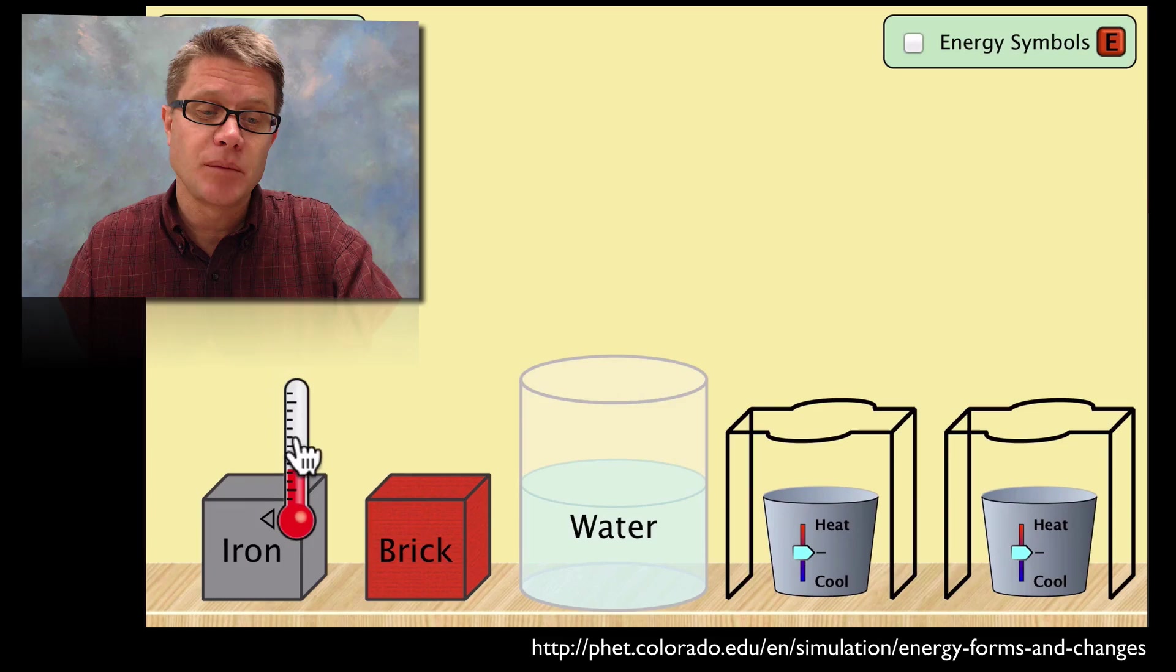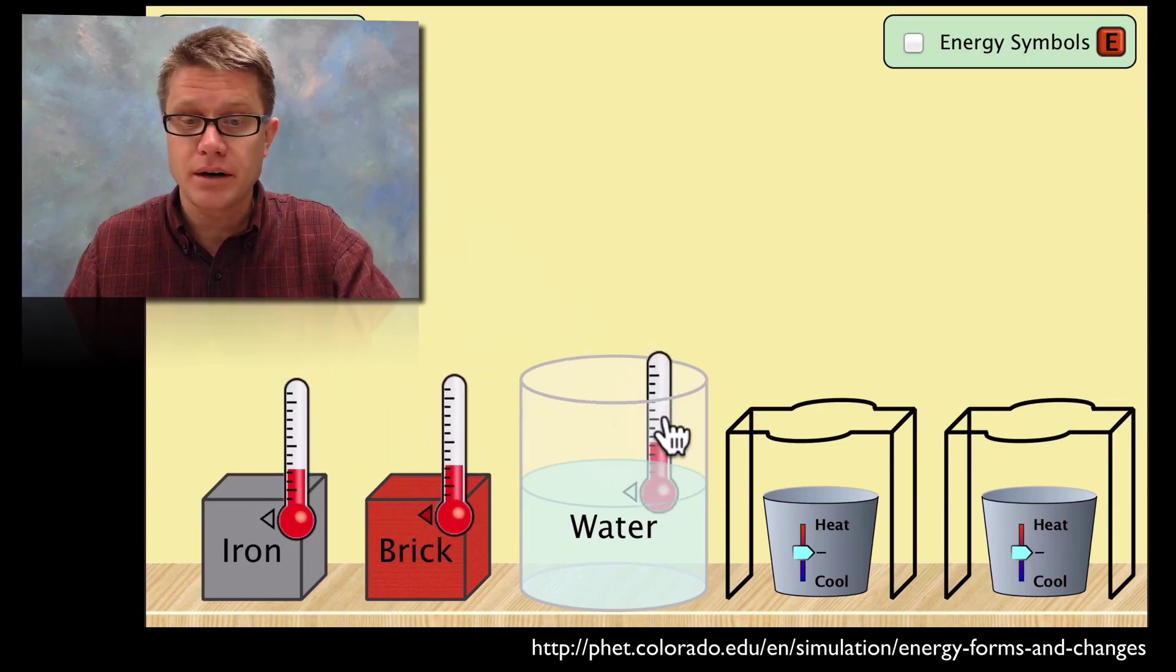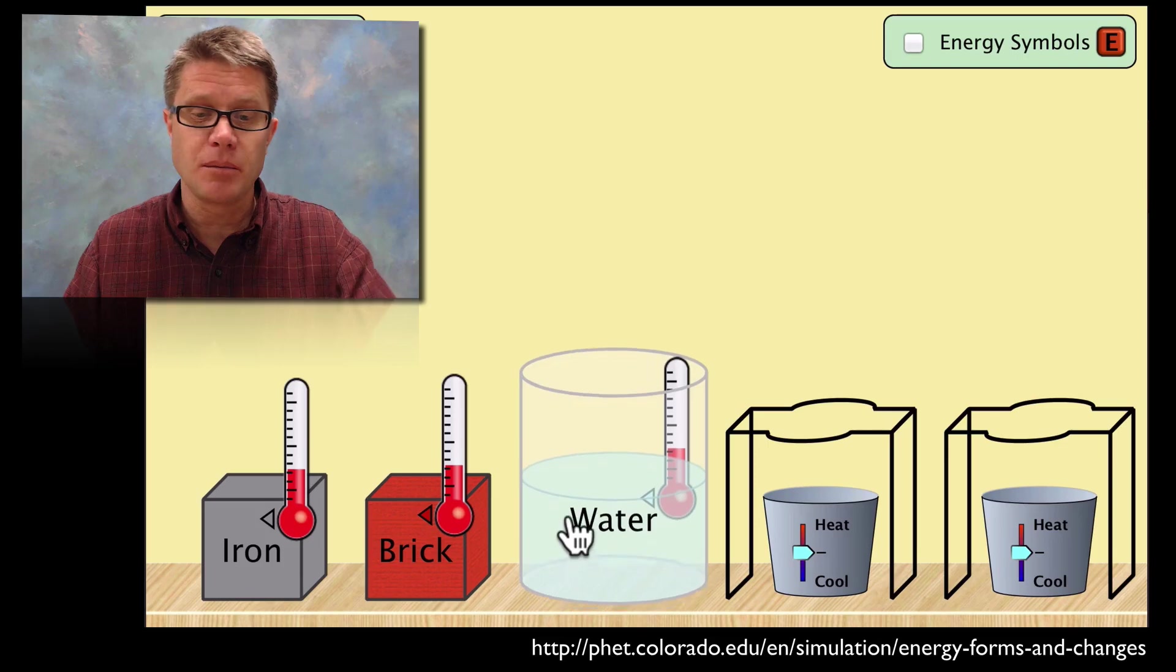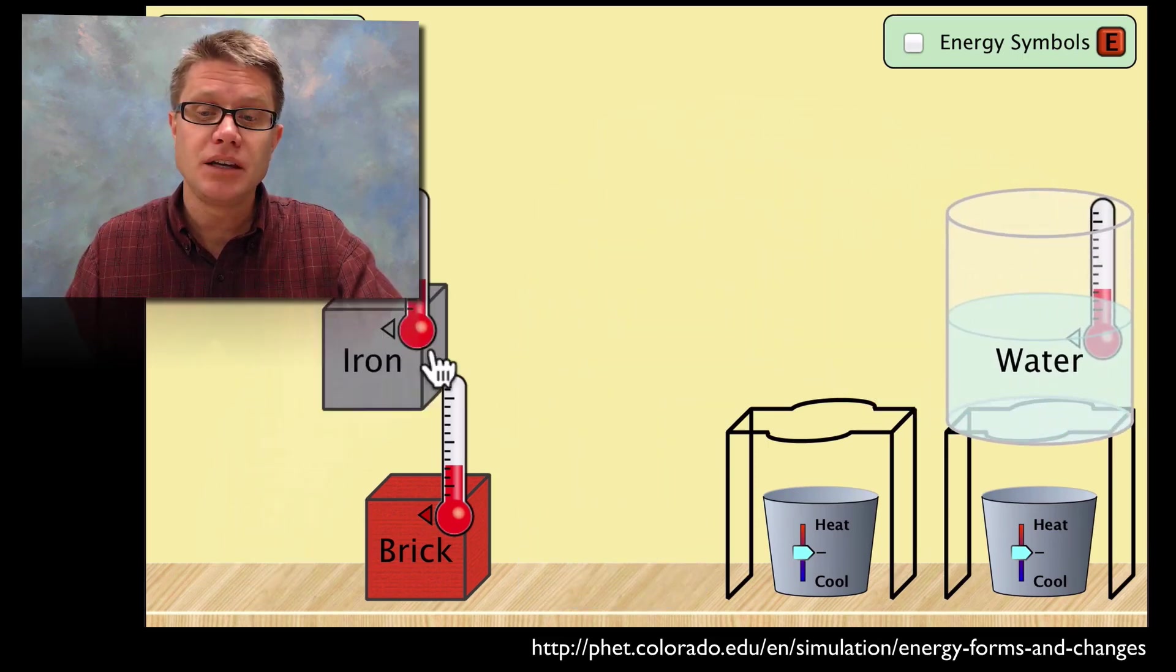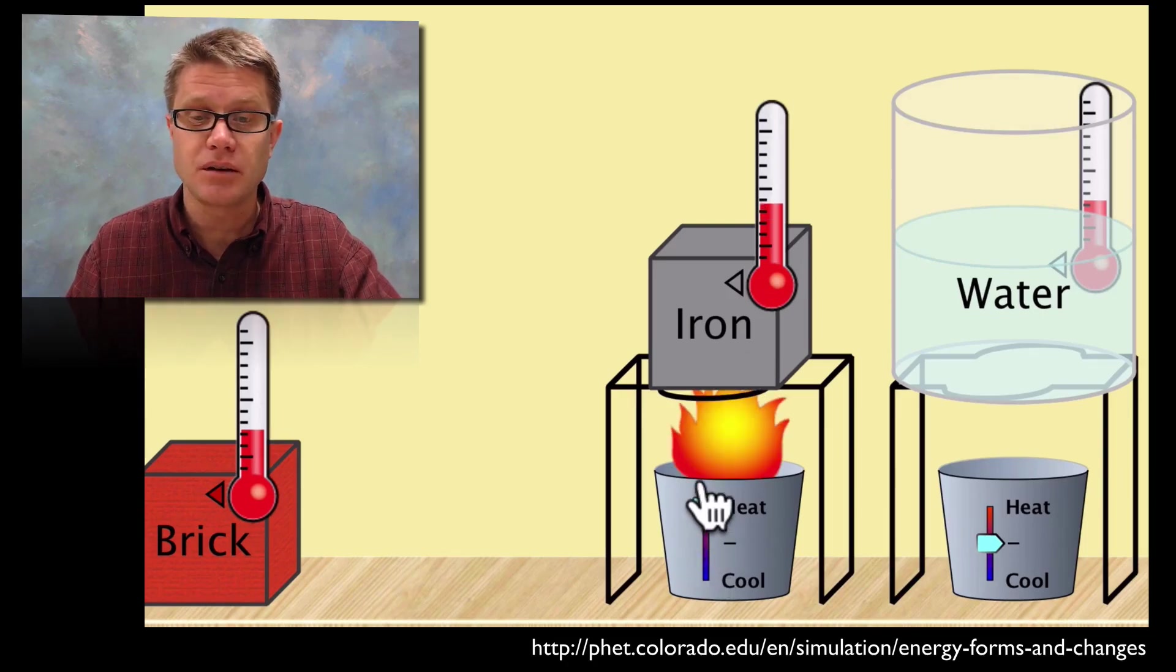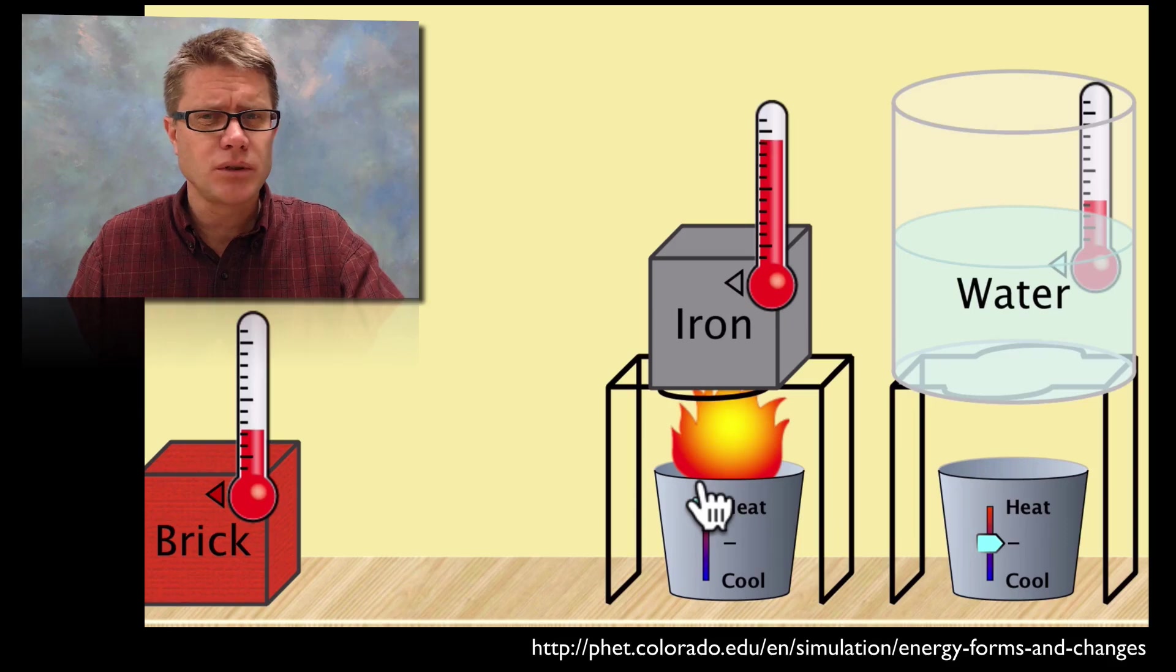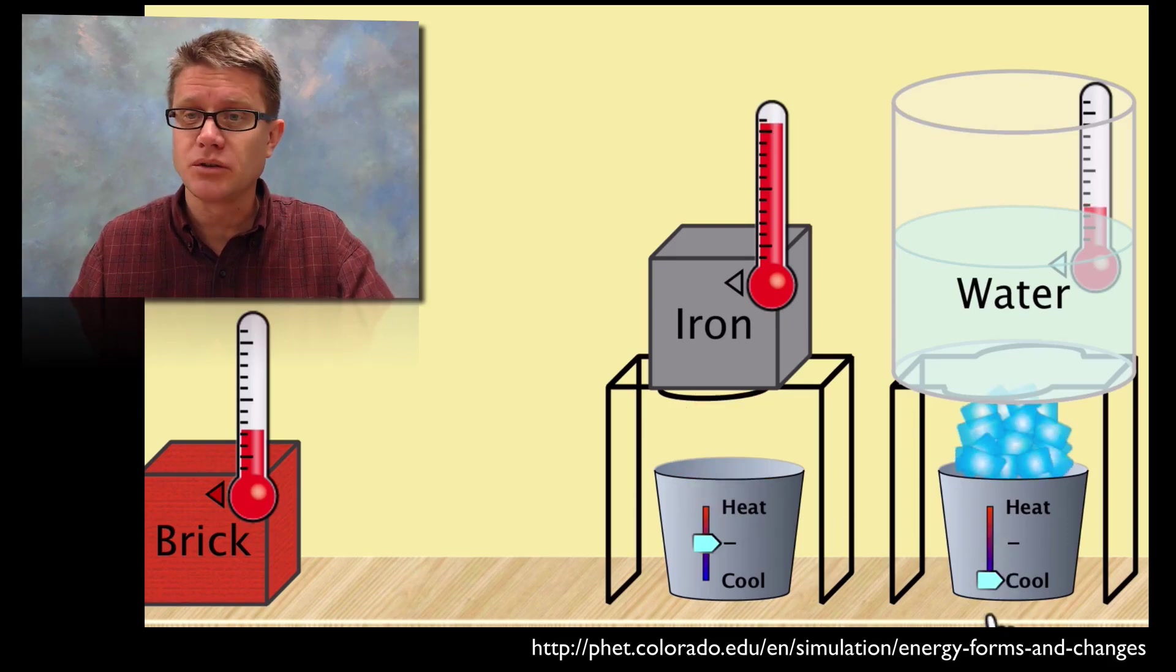So let's look at this PHET simulation. So I've got iron, I've got brick, and then I've got water. And so we can assume that we have the same amount of each of these. And if I were to put the water on top of a heating device and the iron on top of a heating device and just increase the amount of energy, what I'm going to see is an increase in temperature. Well what's really going on is that we're speeding up those molecules.